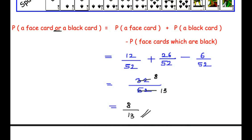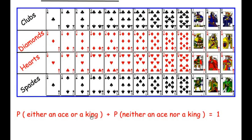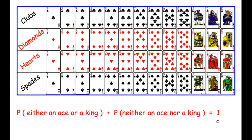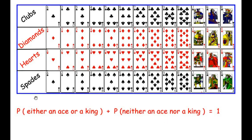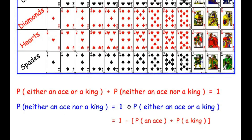Now the second part: getting neither an ace nor a king. Out of 52 cards we have to find the probability of neither getting an ace nor a king. We use the complementary formula: probability of getting an ace or a king plus probability of neither getting an ace nor a king equals 1. Since we are focusing on the event not happening, we rearrange: probability of neither getting an ace nor a king equals 1 minus probability of getting either an ace or a king.